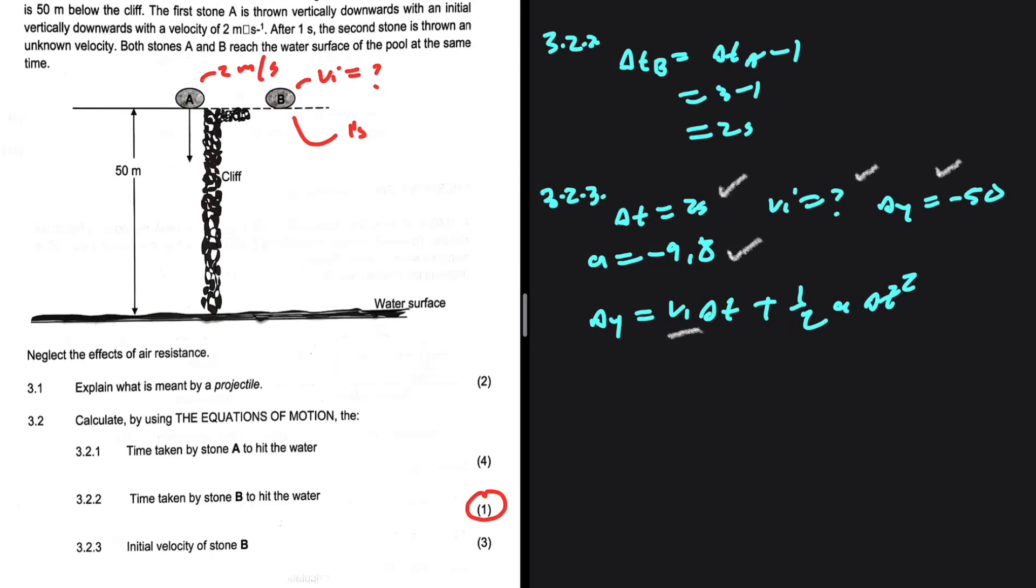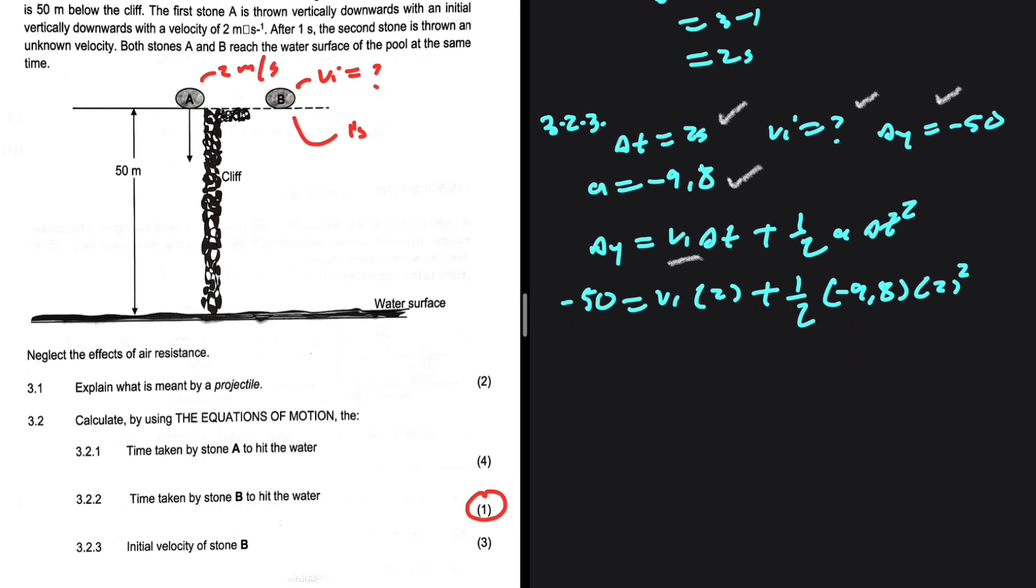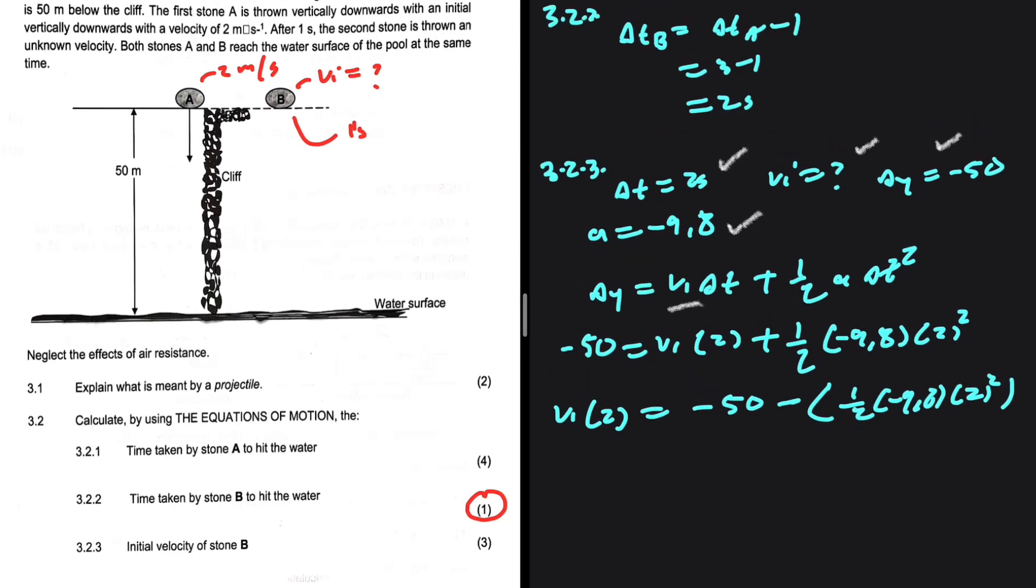So delta y, that is -50, equals vi*delta t (which is 2) plus (1/2)*acceleration (-9.8)*delta t (2²). How do I set up my equation now? vi*2 = -50 - (1/2)(-9.8)(2²). If I divide both sides by 2, I'm getting vi = 15.2 meters per second downwards.